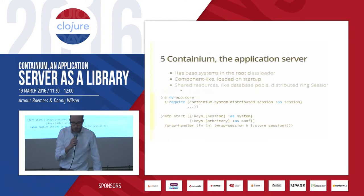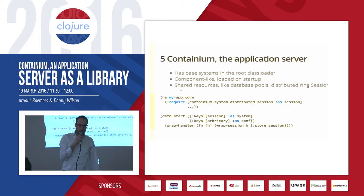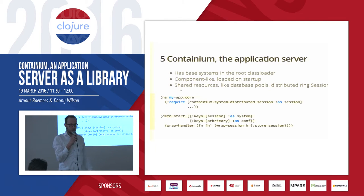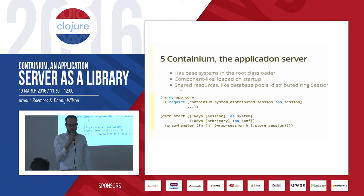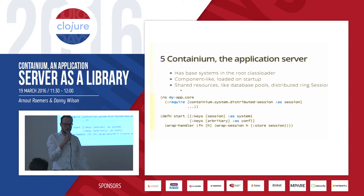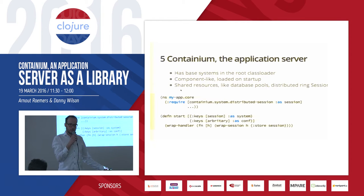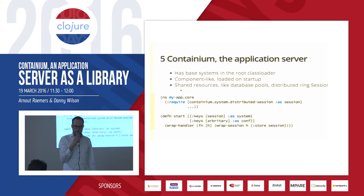Another part of the application server are the core systems. The core systems are like shared resources for your apps — they are component-like, though the component library didn't exist when we started. Those are started on application startup and apps can use them.